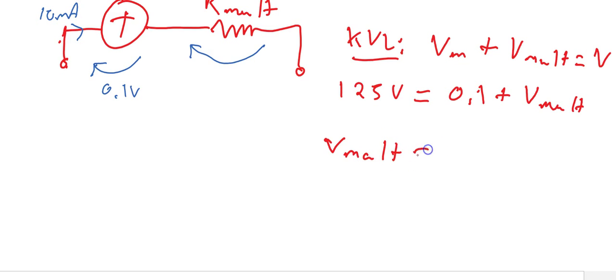Now that means that the voltage drop across the multiplier resistor will be equal to 125 volts subtract 0.1 volts, or 124.9 volts.